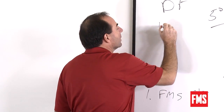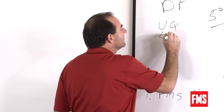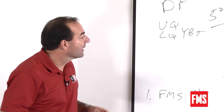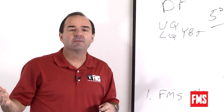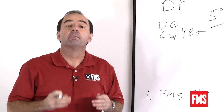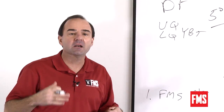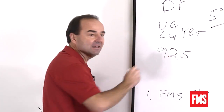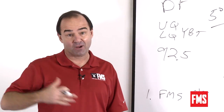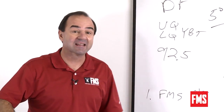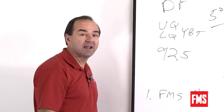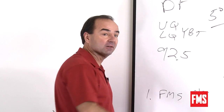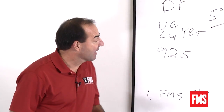Upper quarter and lower quarter Y Balance Test results were part of the model as well. Interestingly, not just whether you'd had a previous injury, but your self-reported recovery mattered — you had to be over 92.5% recovered on a 100-point scale. Anything below 92.5 was a predictor, meaning these people have to feel almost perfect or they're still at risk for injury.